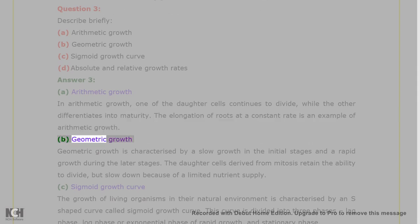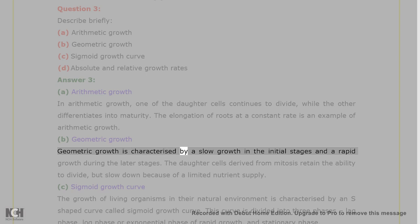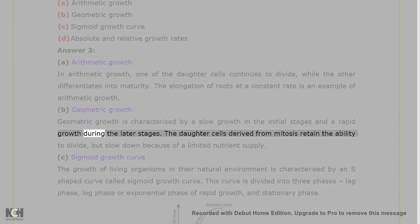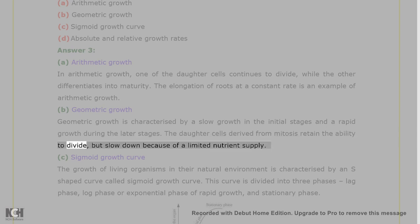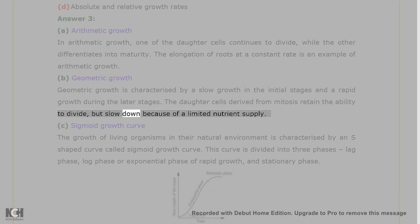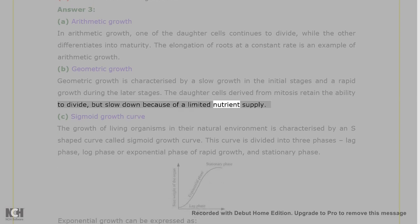B. Geometric growth: geometric growth is characterized by a slow growth in the initial stages and a rapid growth during the later stages. The daughter cells derived from mitosis retain the ability to divide, but slow down because of a limited nutrient supply.